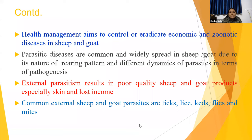Parasitic diseases are one of the important diseases that cause loss in productivity. These parasitic diseases are mainly internal parasites and external parasites. Though we always talk about internal parasites, external parasites or ectoparasites are always neglected. But they are also very important, causing quality losses in sheep and goat products, especially skin. These ectoparasites also carry some important pathogens that again act as internal parasites for small ruminants.